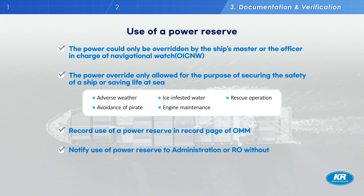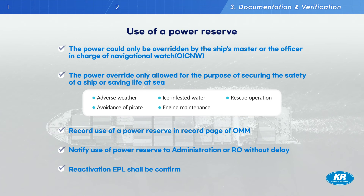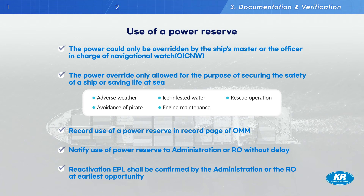The list of required records is detailed in the MEPC document — please refer to MEPC 76-7-4, Annex 3, Section 3. As soon as the cause of temporary release is resolved, the engine power should be lowered to below the power limit. Then EPL should be reactivated to the nearest arrival port and checked by an RO surveyor.